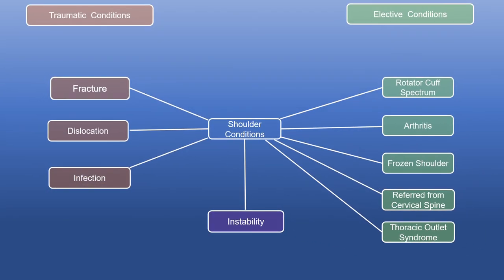So those are the traumatic presentations — usually fairly easy to identify. The important one is not to miss the infection. Elective presentations are a little bit more difficult because you need to know the exact conditions that can occur in a shoulder, and that's what this talk is all about. The most common condition in a shoulder is the rotator cuff spectrum.